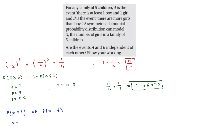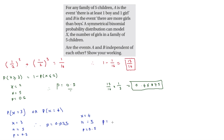We use binomial PD for each. For x = 3, n = 5, p = 0.5: P(X = 3) = 0.3125. For x = 4, n = 5, p = 0.5: P(X = 4) = 0.15625.